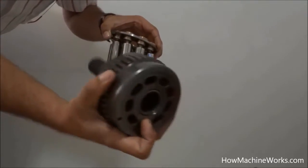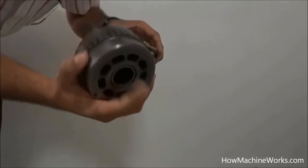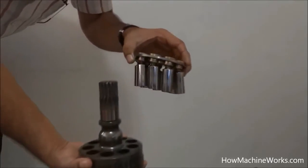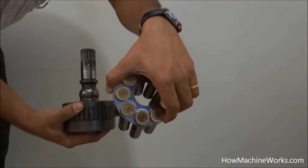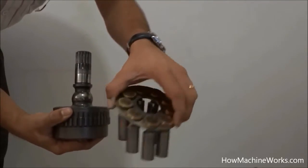Now you can see the cylinder once again and the different angle of the cylinder. Now we will be keeping the piston back into the cylinder block and let's see how it can be assembled back.